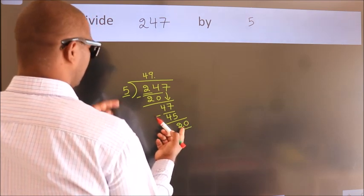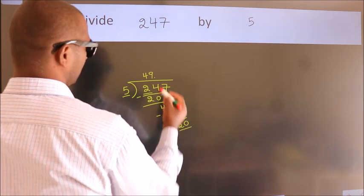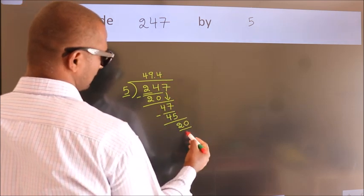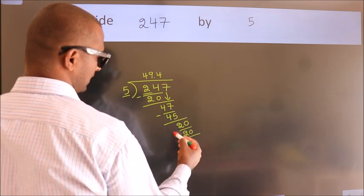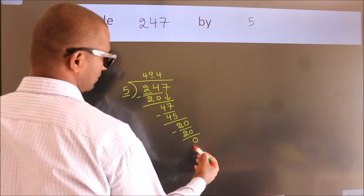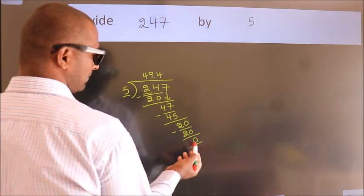When do we get 20? In 5 table. 5 times 4 is 20. Now we subtract. We get 0. We got remainder 0.